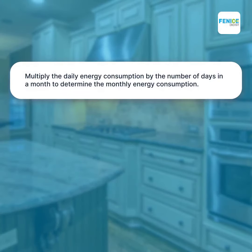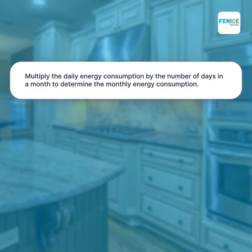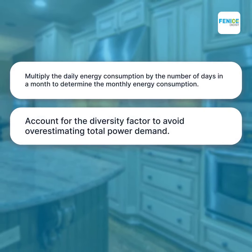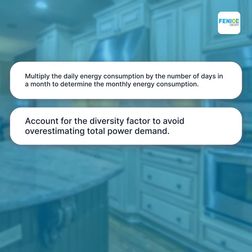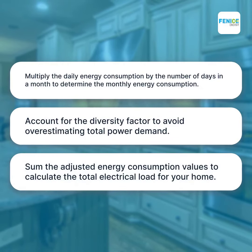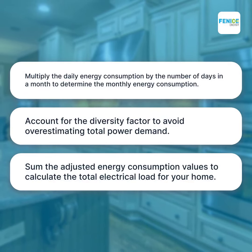Multiply the daily energy consumption by the number of days in a month to determine the monthly energy consumption. Account for the diversity factor to avoid overestimating total power demand. Sum the adjusted energy consumption values to calculate the total electrical load for your home.